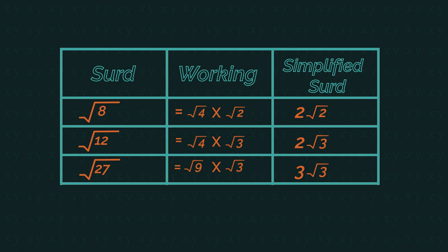Did you notice how when doing the working, we look for a square number that goes into each surd and then what it multiplies by? So root 4 is the square number, multiplied by 2 makes 8. Again, root 4 is the square number, multiplied by 3 makes 12.